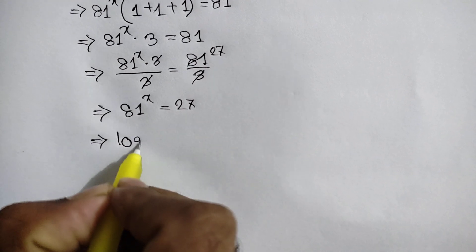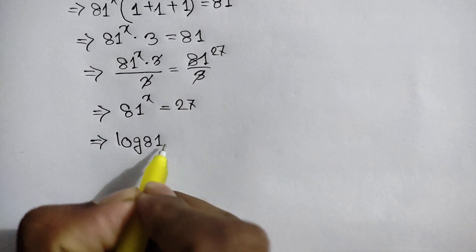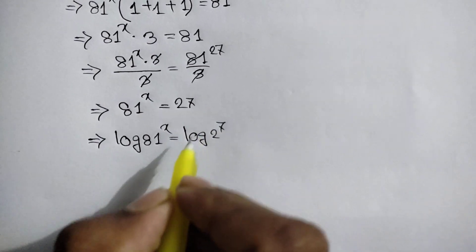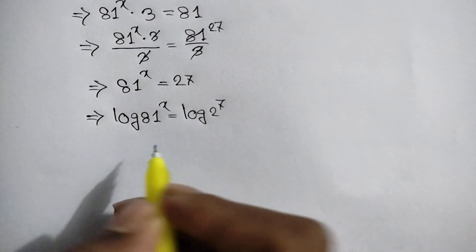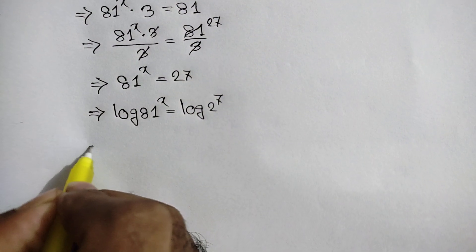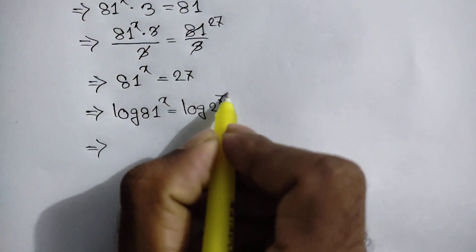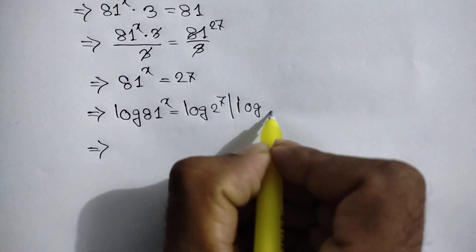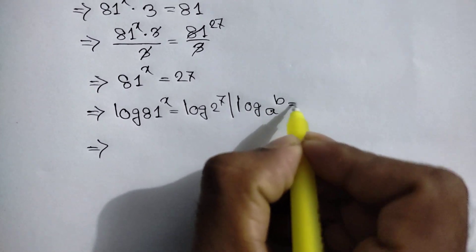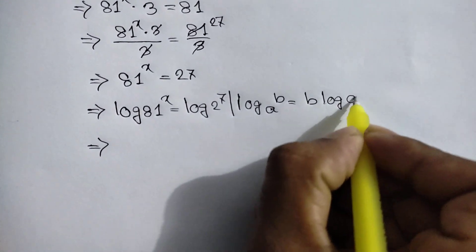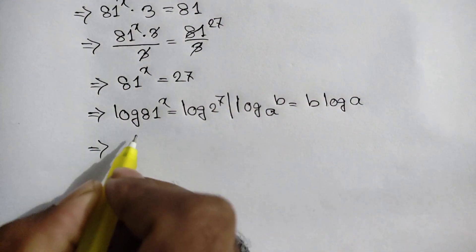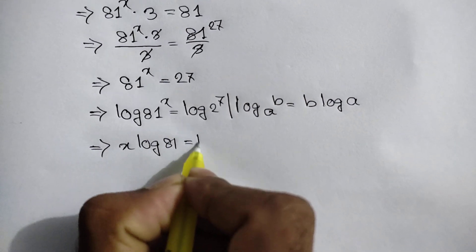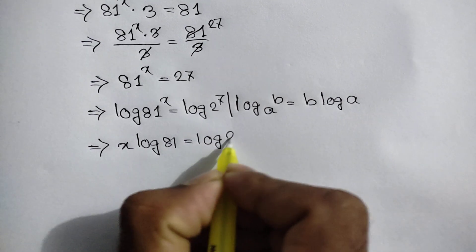So log of 81 to the power x is equal to log 27. Here we can apply the rule: log a to the power b is equal to b times log a. So we can write x times log 81 is equal to log 27.